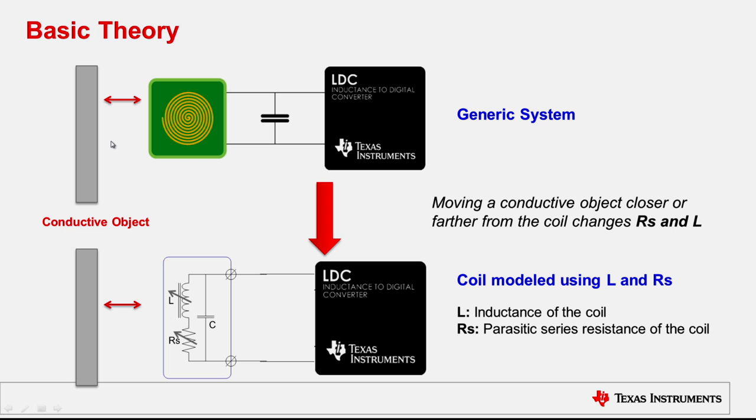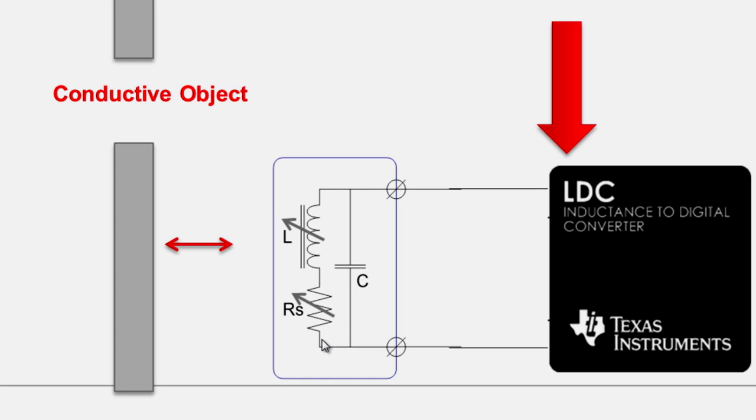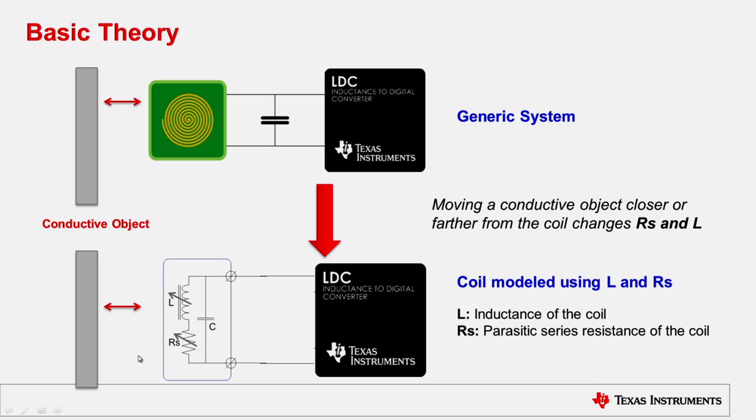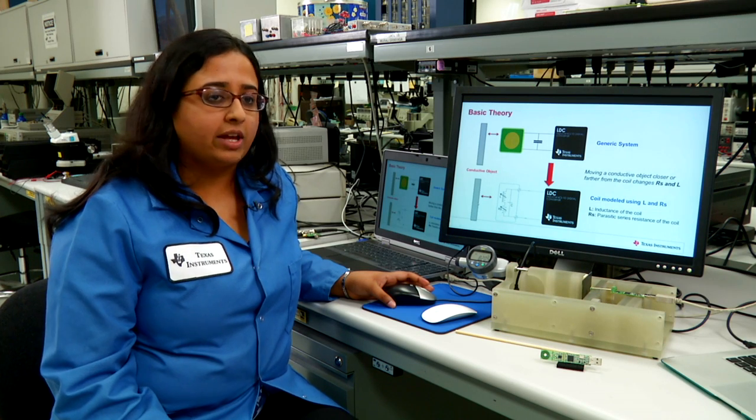The coil can be modeled as an inductor in series with a parallel resistor. The resistor here is marked RS as a parasitic series resistance and the L is also variable. These two vary based on how close or far away you're moving your conductive target.